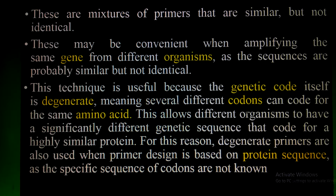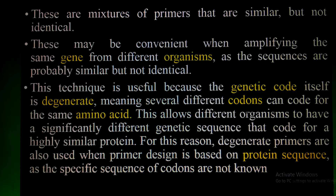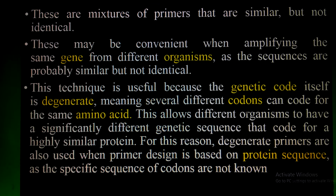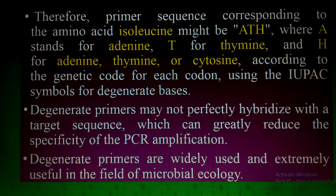This allows different organisms to have significantly different genetic sequences that code for a highly similar protein — for example, collagen and many other proteins from plants, animals, and microorganisms. For this reason, degenerate primers are also used when primer design is based on protein sequences. If you know the protein sequence of some organism but their gene sequence is unknown, you can use degenerate primers to determine the sequence of that gene when the specific codon sequences are not known.